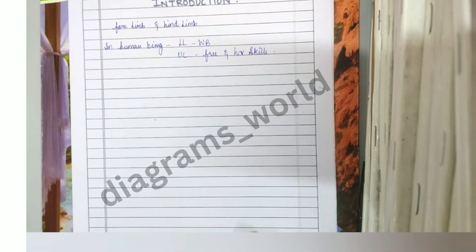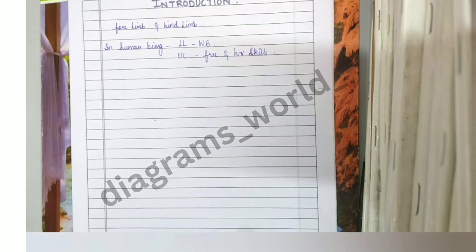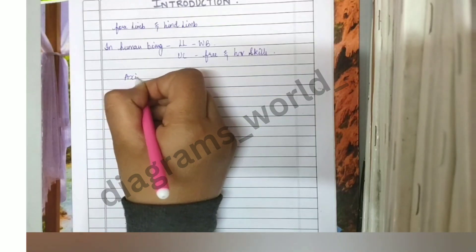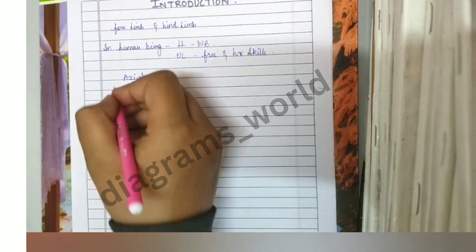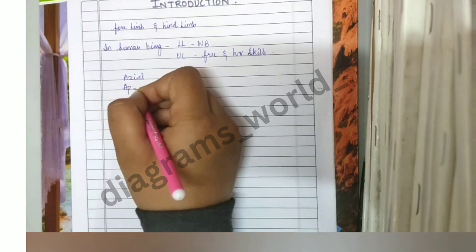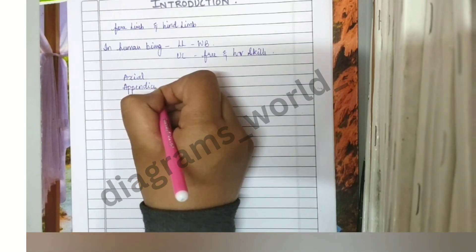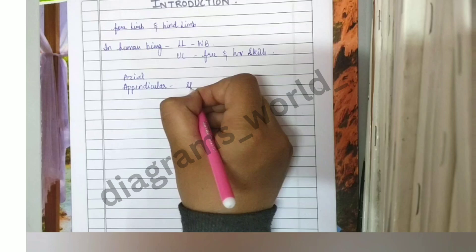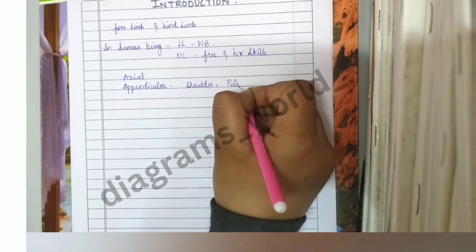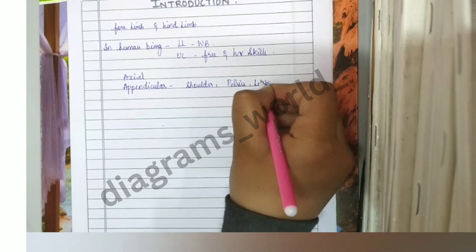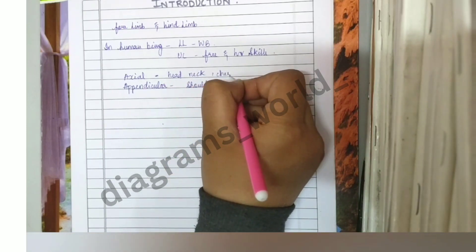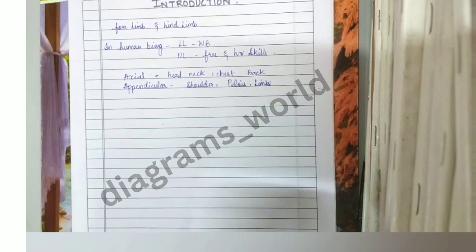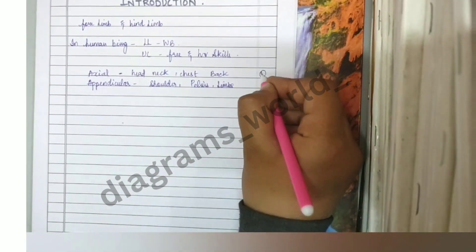Before getting deep into this, you should know about the axial and appendicular skeleton. The axial skeleton consists of the bones of your head, neck, thorax, and back. The appendicular skeleton consists of the bones of the shoulder, pelvis, and limbs.